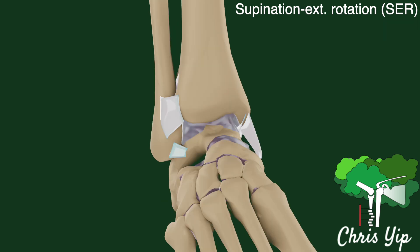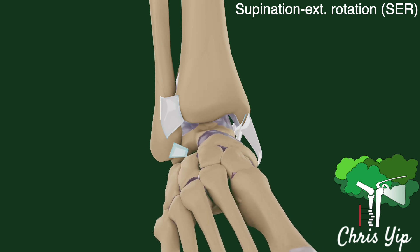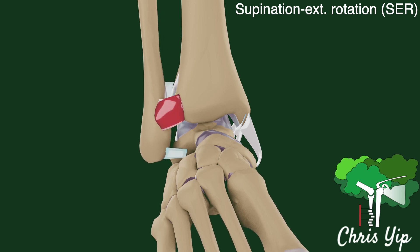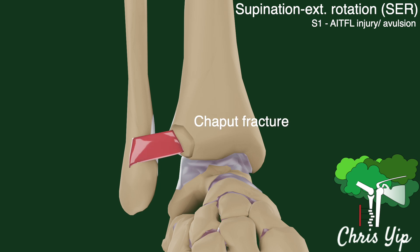The second category of injuries are supination external rotation injuries, which are by far the most common mechanism of injury. The position of the foot is supination to begin with, followed by external rotation. The external rotation pushes onto the lateral fibula, causing great tension in the anterior inferior tibial fibular ligament. This will eventually lead to an injury of the ligament or an avulsion fracture — known as a Chaput fracture — which is just one of a few different morphologies that can present with an anterior inferior tibial fibular ligament injury.